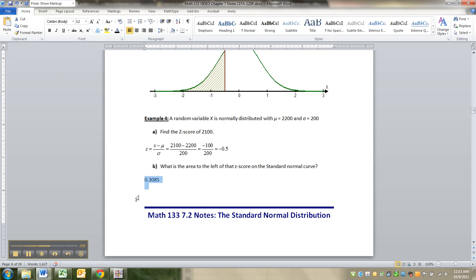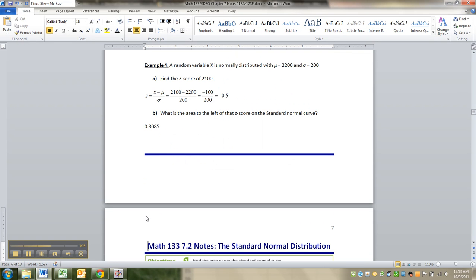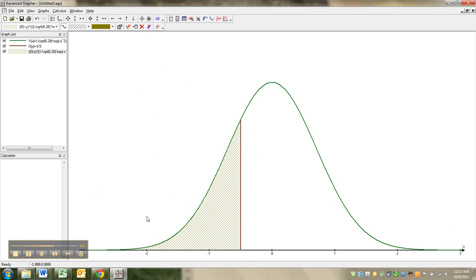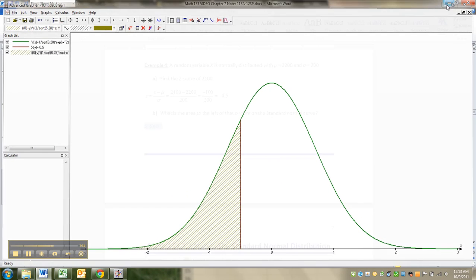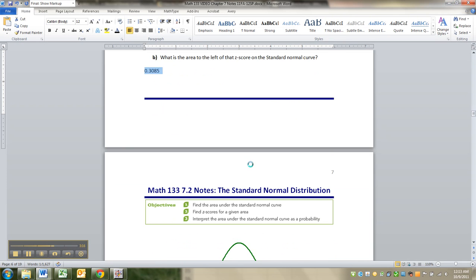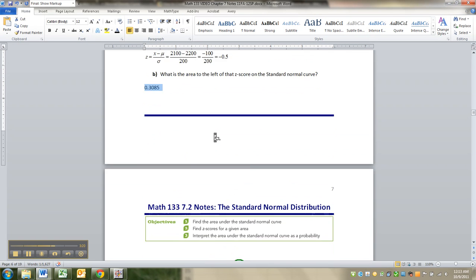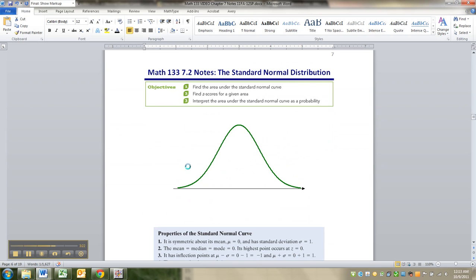Now, the real question now is, where the heck did that 0.3085 come from? And how could you make it so that a computer gives that to you, right? And especially if you don't own Advanced Graph, or I mean, Advanced Graph will tell you, this program will tell you that it's 0.3085. But I mean, who wants to own that? Nobody, right? So we want to use Excel to find that number, and that's what we'll do in the next section in 7.2. So I'll see you then.